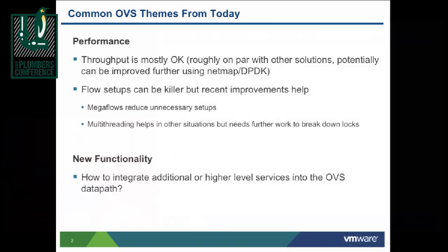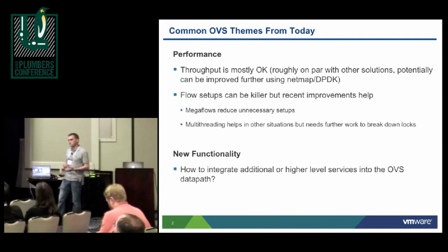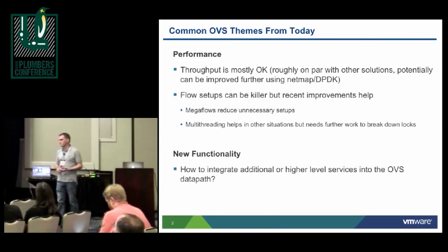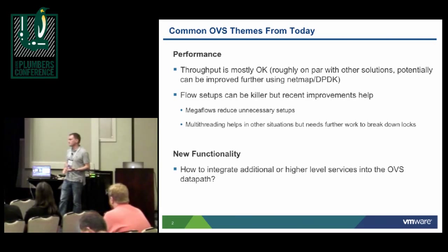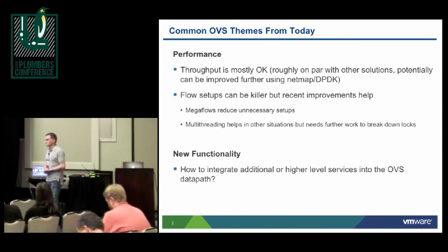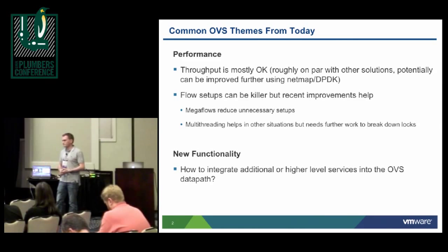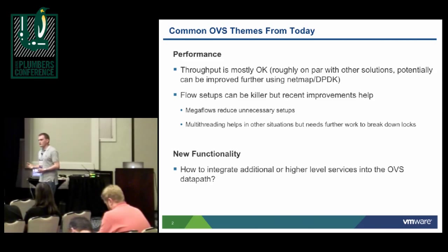The first theme that obviously came up was performance. It seemed like the throughput was generally on par with existing solutions. There are definitely ways that it can be improved, either things like NetMap or DPDK. Those are obviously things that we should continue to push for. It's not probably a disadvantage of having all this additional flexibility that you need for software-defined networking or any of the new models that people are trying to use.